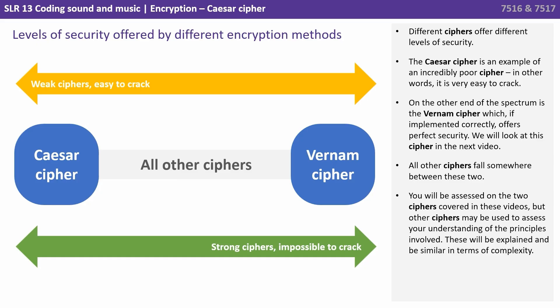On the other end of the spectrum is the Vernon cipher, which, if implemented correctly, offers perfect security, and we'll look at this particular cipher in the next video. All other ciphers fall somewhere between these two.